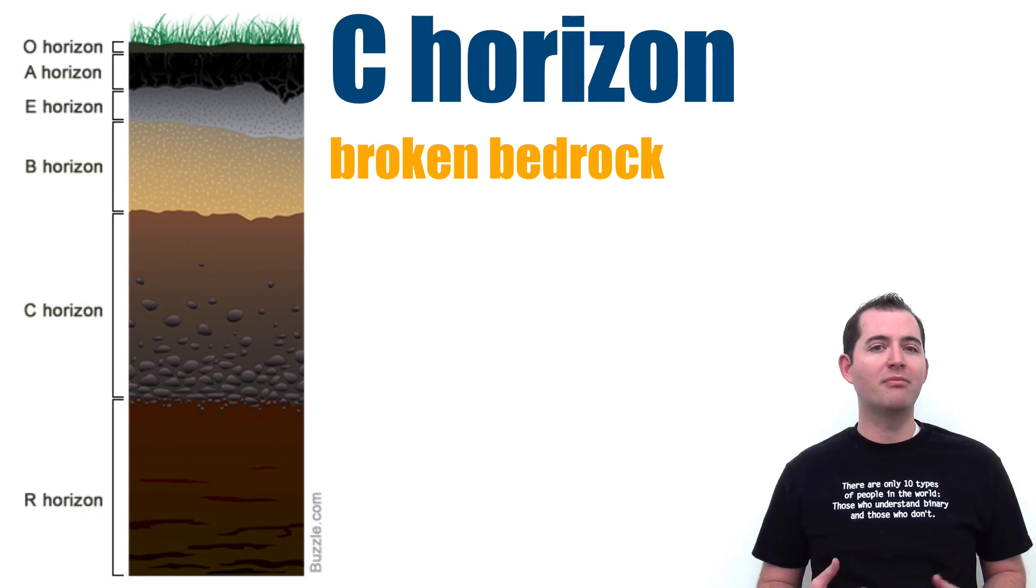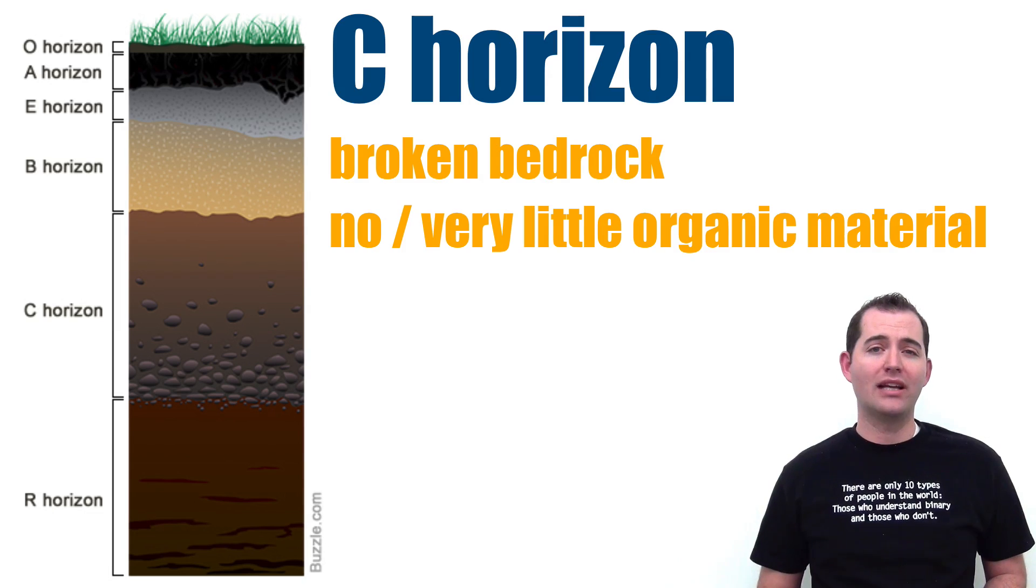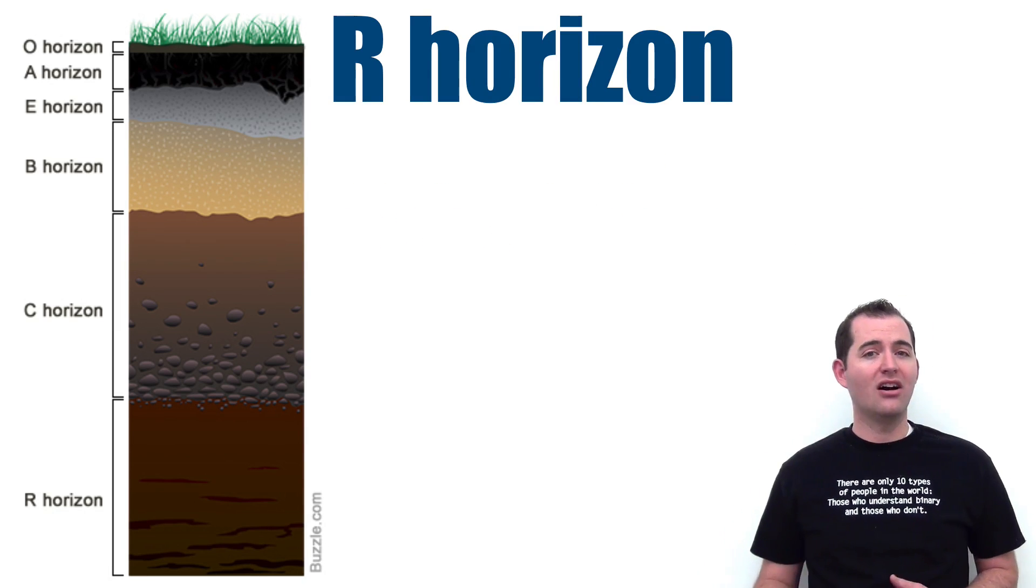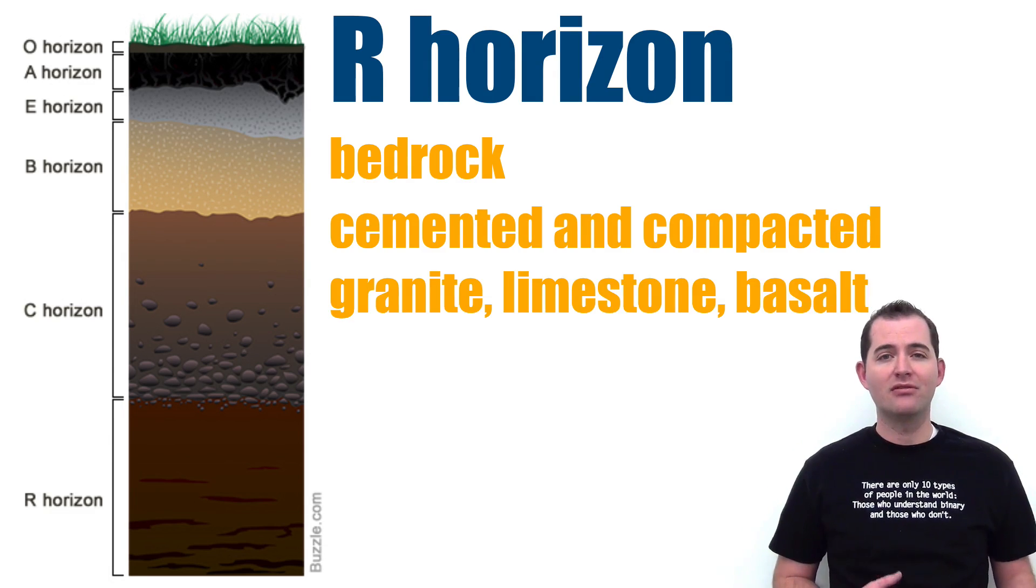Horizon C is often made up of broken bedrock and it contains no or very little organic material. Horizon R is the bedrock and it is often cemented and compacted together. This is typically made up of granite, limestone, or basalt.